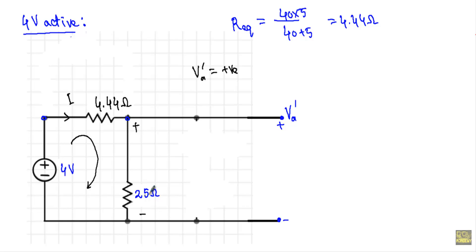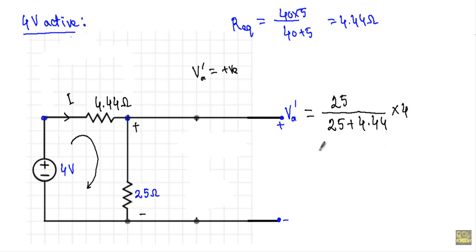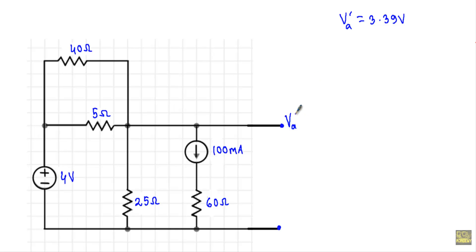To calculate the voltage across the 25 Ω resistor, I apply the voltage divider rule: VA prime = [25 / (25 + 4.44)] × 4 = 3.39 volts. After calculating VA prime for the 4-volt source, I keep the 100 mA current source active and replace the voltage source with a short circuit.